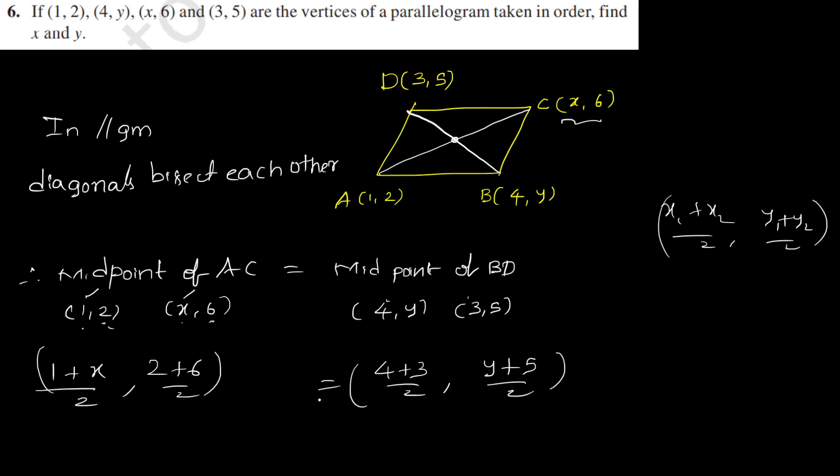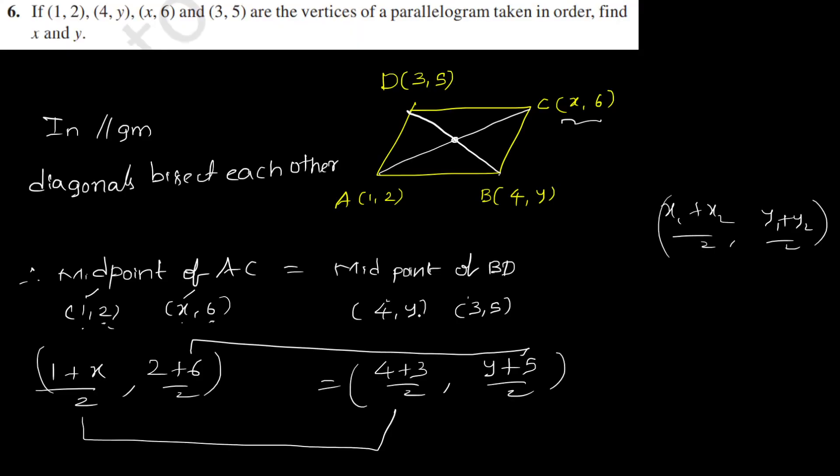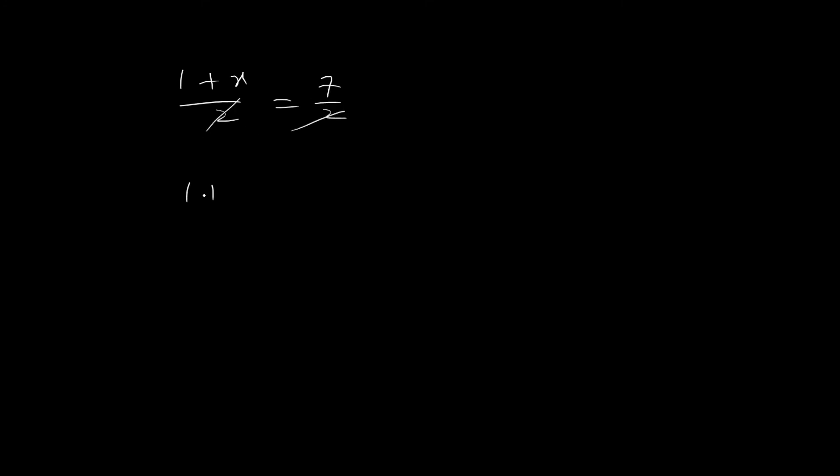Now since both are equal, this should equal this. So (1+x)/2 = 7/2. Cancel the 2: 1+x = 7. x = 7-1. x equals 6.